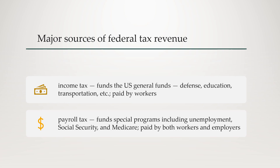The major sources of federal tax revenue are two. First is the income tax — what people typically mean when they talk about doing their taxes around April 15th. Income tax funds the U.S. general fund, covering things like defense, education, and transportation. It's paid by workers on their earned income. The payroll tax, on the other hand, funds special programs including unemployment, Social Security, and Medicare, and is paid by both workers and employers — generally half each.